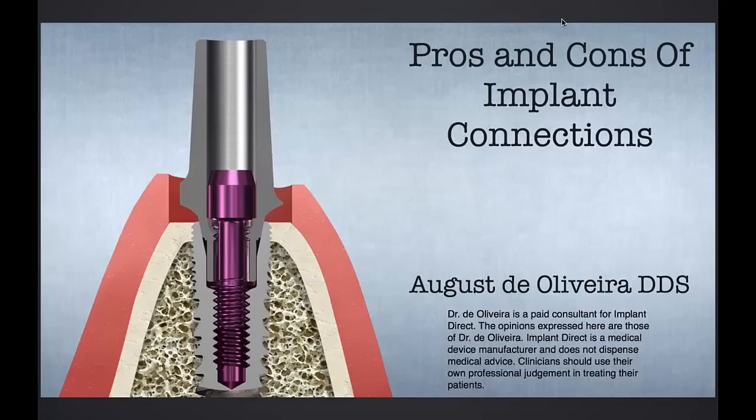As a general dentist who is placing implants, prior to placing implants, I wouldn't really choose what implant I used — it was whatever the specialist sent me. I'm sure there are a lot of GPs out there either placing their own implants or wanting to listen to this webinar. It's a nice way to talk about all the different connections, the pros and cons of mainly two of them — the internal hex implant and the conical connection — and help you figure out which one you want to start out with.